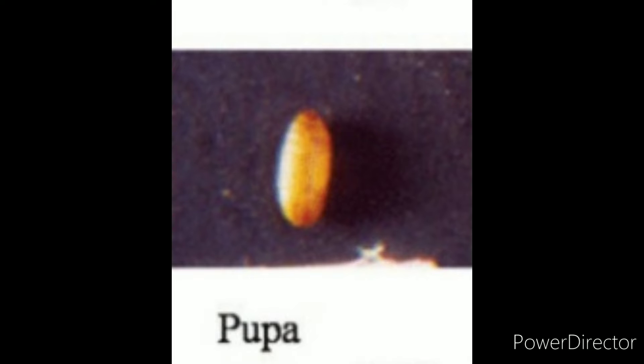Third, pupae. The pupae are white, brown, or black, and four to twelve millimeters long. They are found in the soil, two to five centimeters beneath the host plant. The flies emerge from the pupae ten to twenty days after pupation, depending on climate conditions.